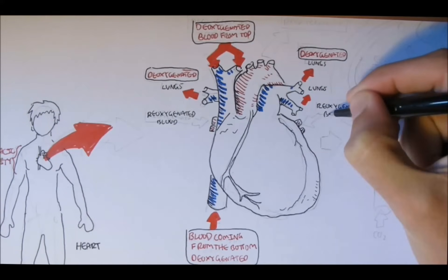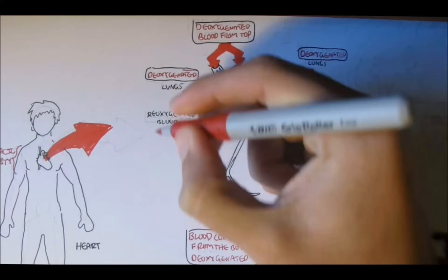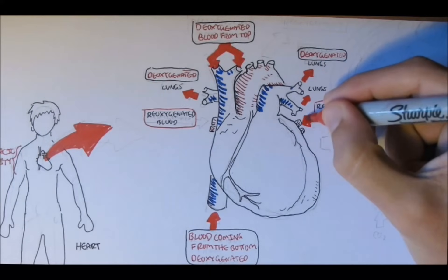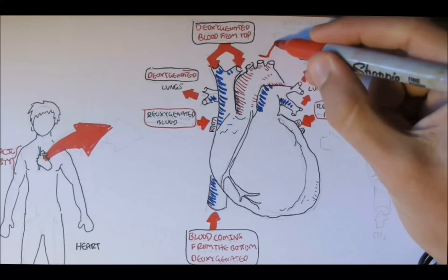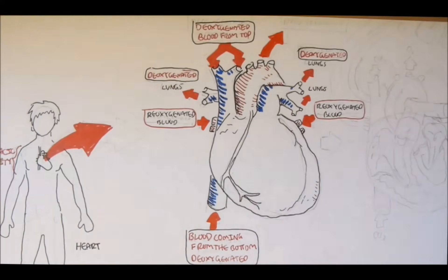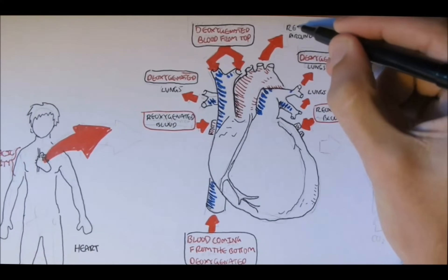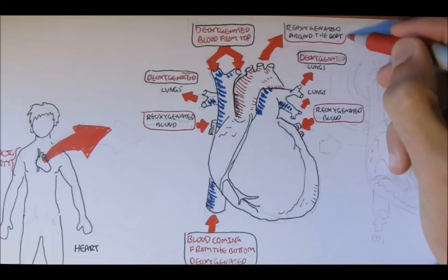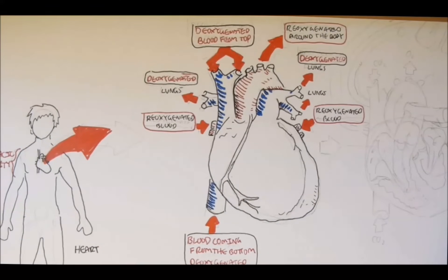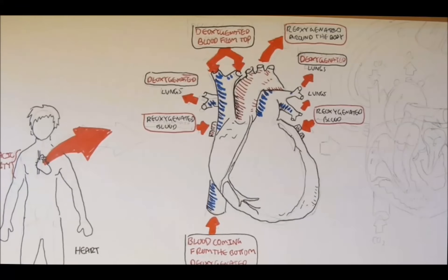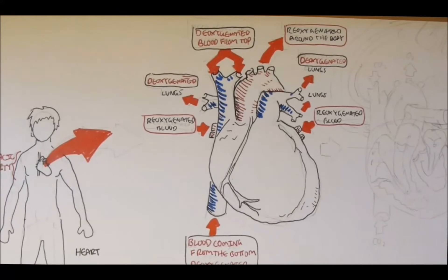This re-oxygenated blood will then come back to the heart from the left side, and then will be pumped back out through the aorta to the whole body. De-oxygenated blood is denoted as the colour blue, and red means oxygenated — full of useful oxygen. Typically arteries are red and veins are blue, because arteries leave the heart with oxygenated blood to supply the body, and veins come back to the heart with de-oxygenated blood.